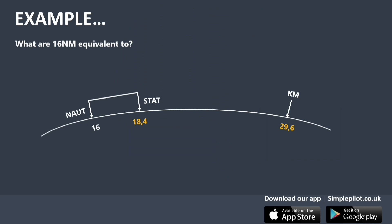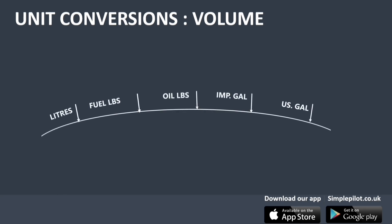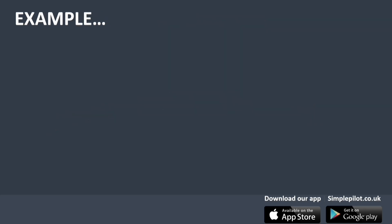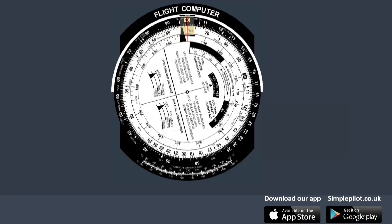Let's move on to the conversion of units of volume. There will be several arrows with different units around the outer scale, used in the same way as with distance conversion. Normally the units available are liters, pounds of fuel, pounds of oil, imperial gallons, and U.S. gallons. For example, to convert 30 liters into other units of volume, align 30 with the liters arrow and read the corresponding values for the other units.